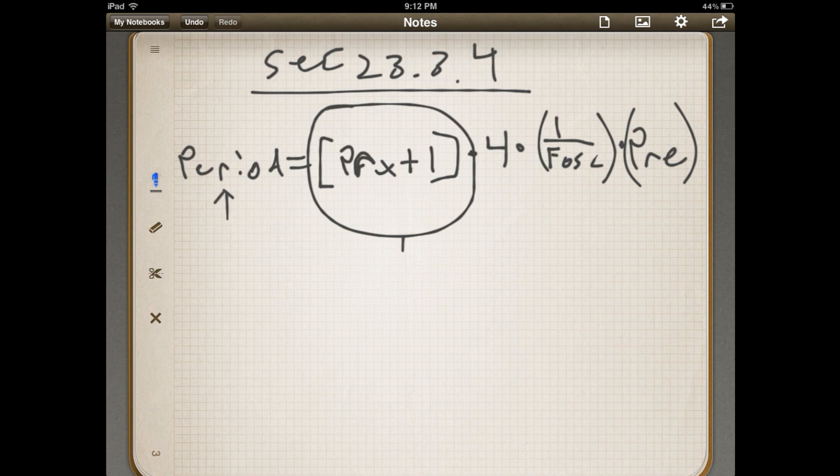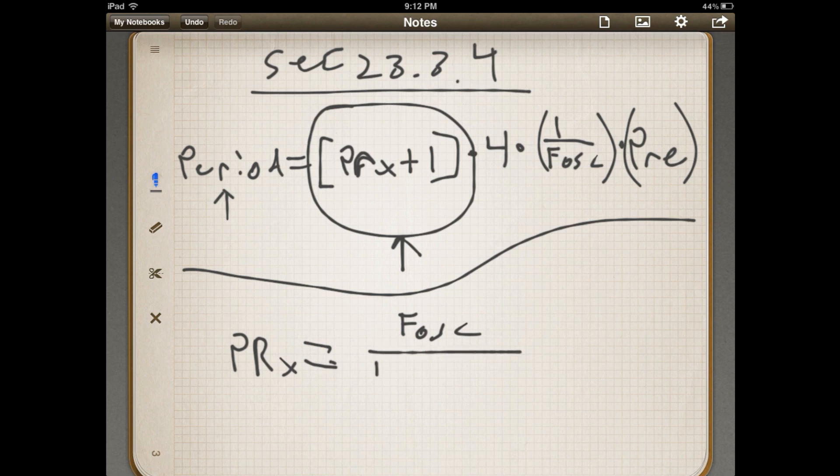So what we need to do is we need to solve for that piece, because that's what we need to know. Usually you'll pick your period. You know what it is. You want a one kilohertz waveform or 3.2 kilohertz waveform or something. So we need to know this piece. In order to solve for this, I'm not going to have you guys painfully watch me go through this. What I found is the PRX is going to equal your FOSC divided by four times your pre-scale times the frequency of your PWM, times all that. Then that whole thing minus one.